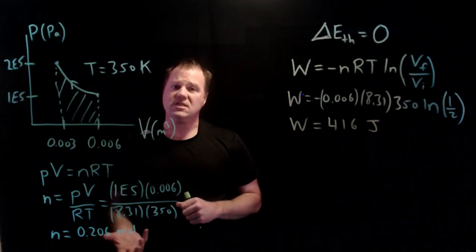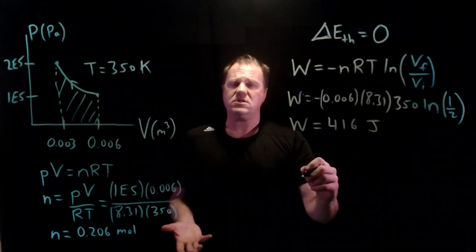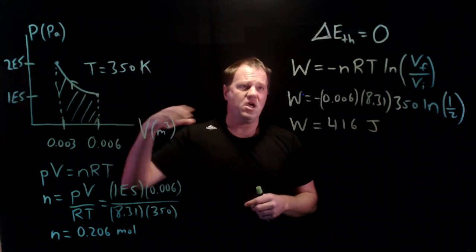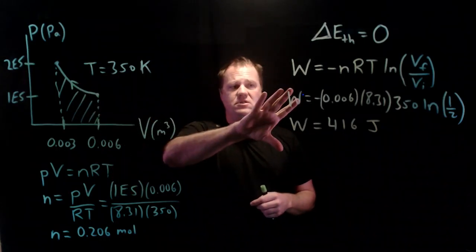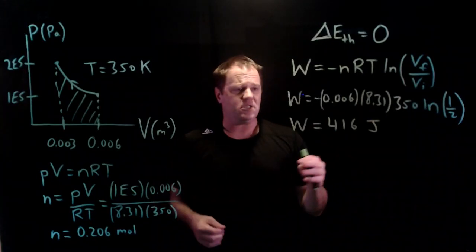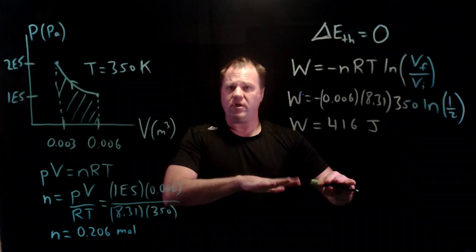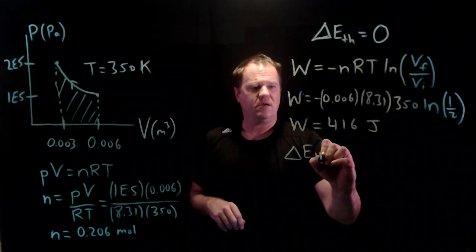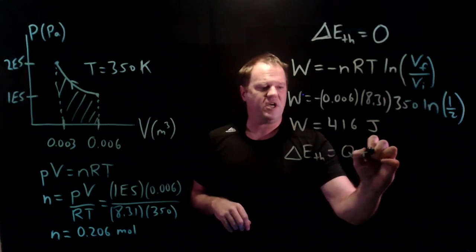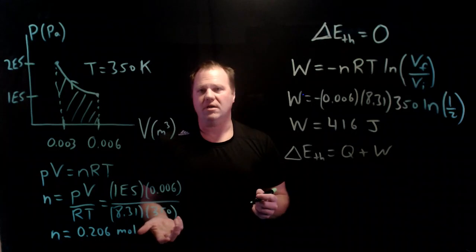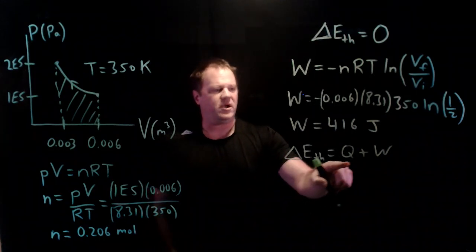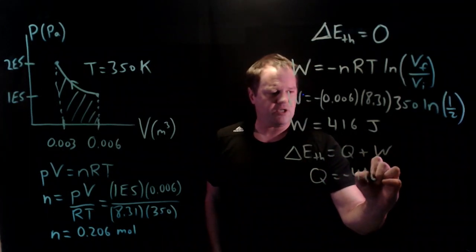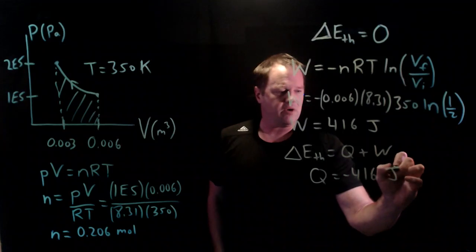So last thing is to calculate the heat. We can use the first law of thermodynamics. Typically when you're doing these types of problems or calculating energies for processes, you have to do two calculations kind of independently. Sometimes you might get lucky and get a zero. And then the third one, once you've got two out of the three, you use the first law of thermodynamics. So we have that change in thermal energy equals Q plus W. And you could probably do this one in your head, right? Because we have a zero change in thermal energy, so the heat and the work have to be the opposite. So I'm just going to forego the algebra and simply make an assertion that heat has to be negative 416 joules.